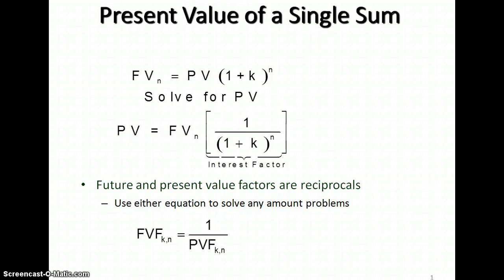The present value of a single sum formula is really just the inverse of the future value. The present value is 1 divided by 1 plus the interest rate k, or sometimes i, raised to the nth power, meaning the number of periods. That's the mathematical formula we're going to use as we look at this.